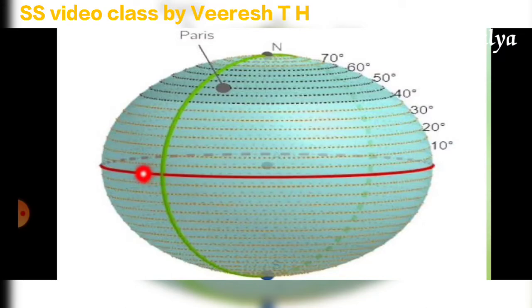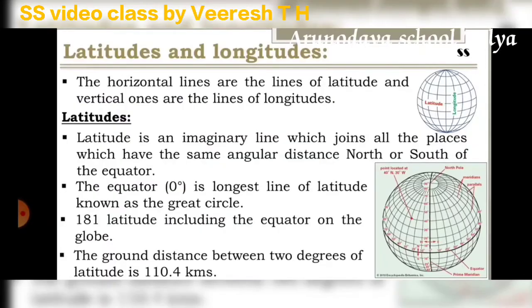The equator line is the greatest circle on Earth. There are 181 latitudes in total, including the equator on the globe.